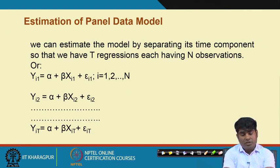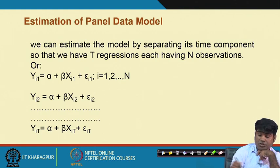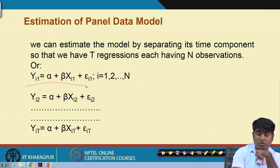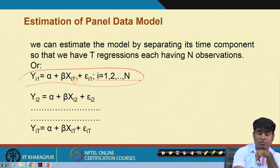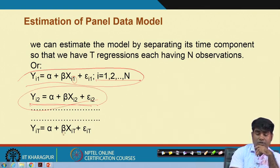Starting with y_it = alpha + beta * x_it + error term: keeping i constant and allowing t to vary — t varies from t=1, t=2, t=3, and so on. When i remains constant and t varies, for t=1 the model transfers into a form where i varies and t is fixed at 1. In the second model, t=2 and i remains constant — that is how the model works. This continues up to the T-th time period. Every time we can have a different estimation and different model output keeping i constant. For instance, an individual company has time series data for one period and time series data for another period — you can run the model separately.